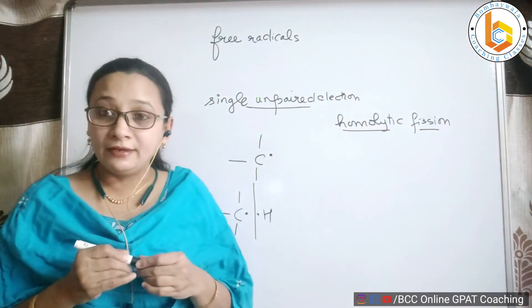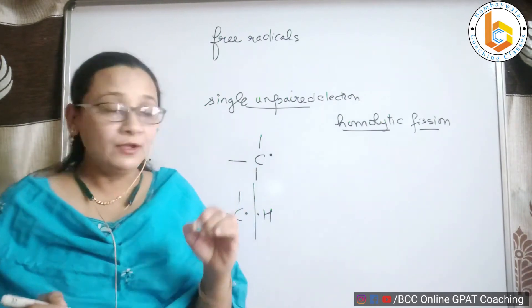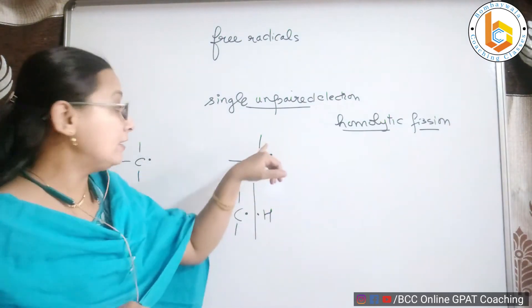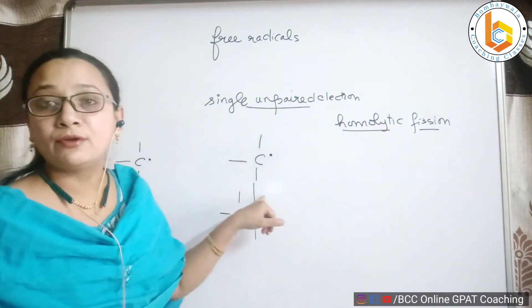This is called a free radical - a species, a highly unstable reaction intermediate which contains only one electron, is referred to as a free radical. One unpaired electron, while rest others are there. For example, total number of electrons are seven, but one unpaired electron is referred to as a free radical.